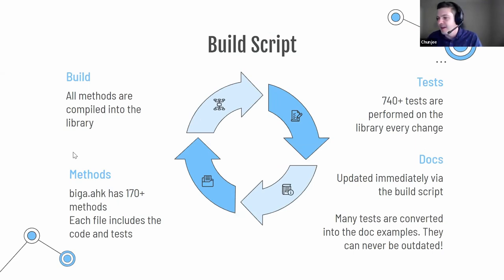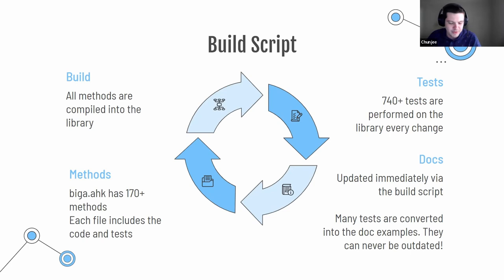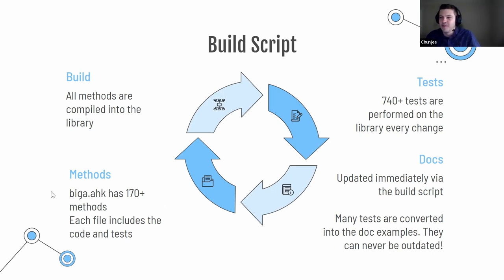One thing I'm really excited about: when I started this project, I knew there were going to be a lot of methods — close to 200 — because I was designing it off of an existing JavaScript class. So I needed some kind of build script to keep it all organized. All the methods have their own file, and each file also has all the tests. The build script goes through all of them with a simple AutoHotKey file loop and pulls them together into the library.